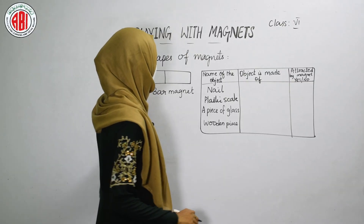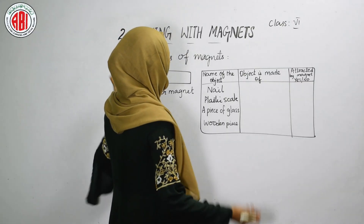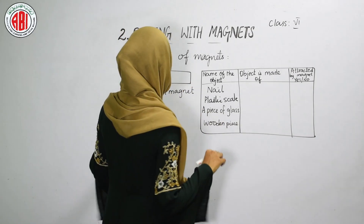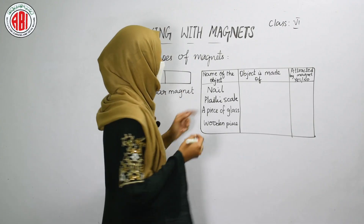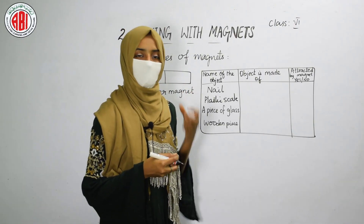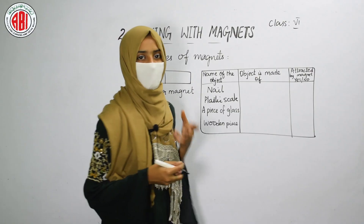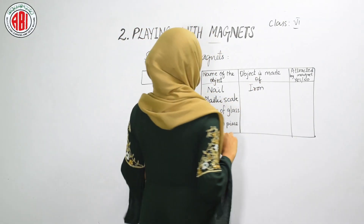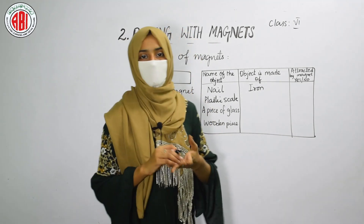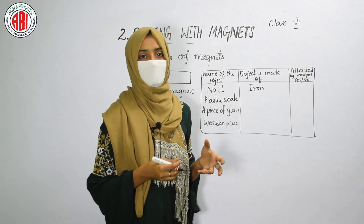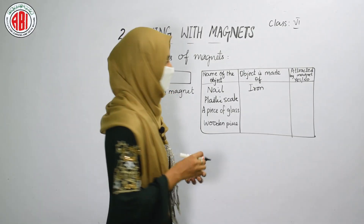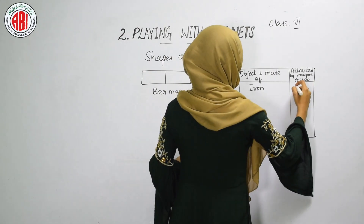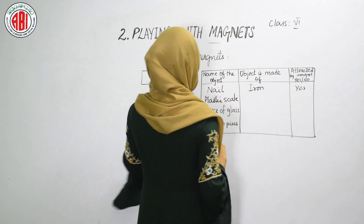Now let us take one bar magnet and see whether different materials are going to be attracted by it or not. When we take an iron nail towards the bar magnet, it definitely attracts the iron nail. The nail is made up of iron, and every time iron or materials made up of iron or steel are brought near, they get attracted by the magnet. So yes, the iron nail is attracted by the magnet.